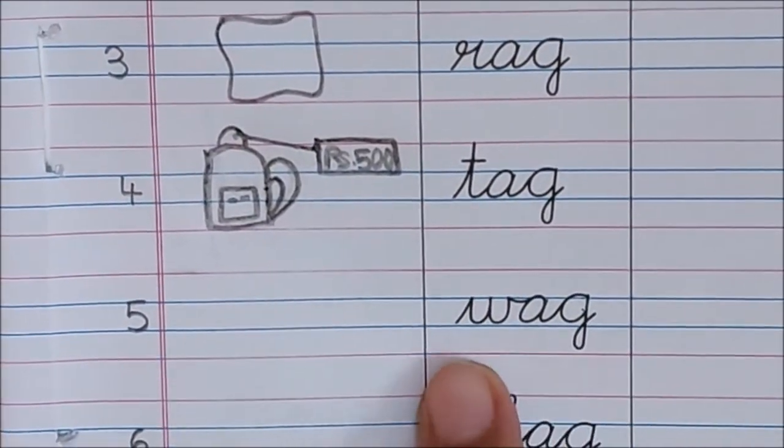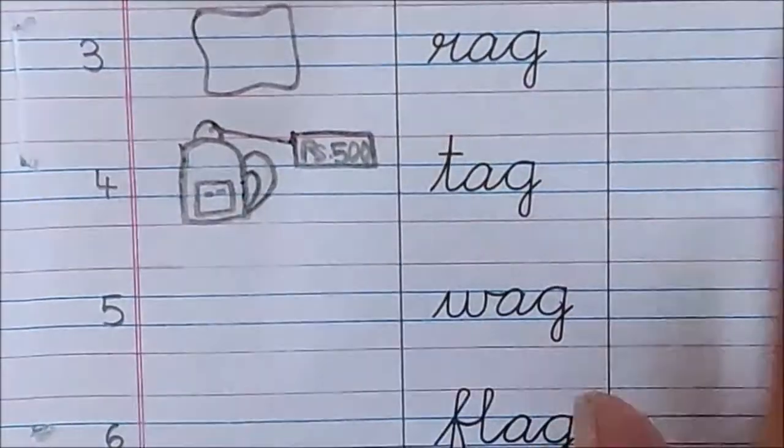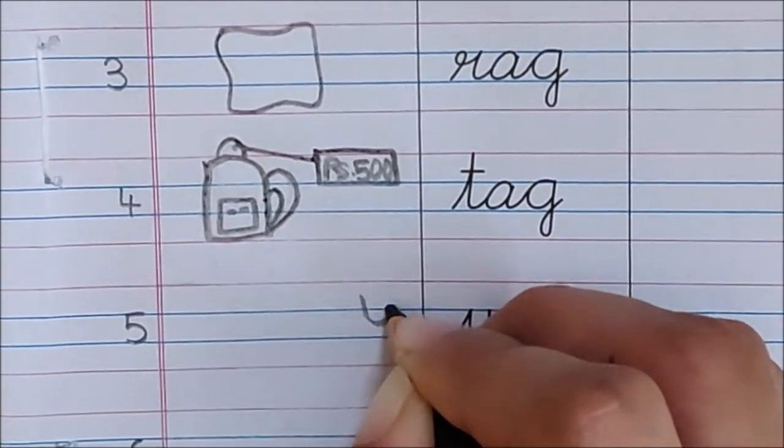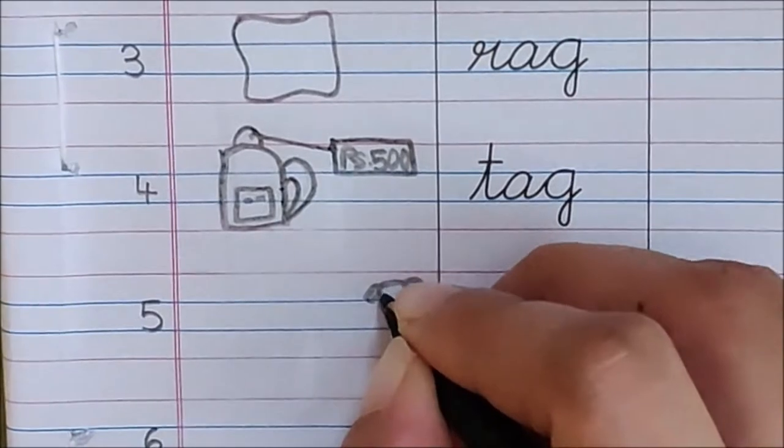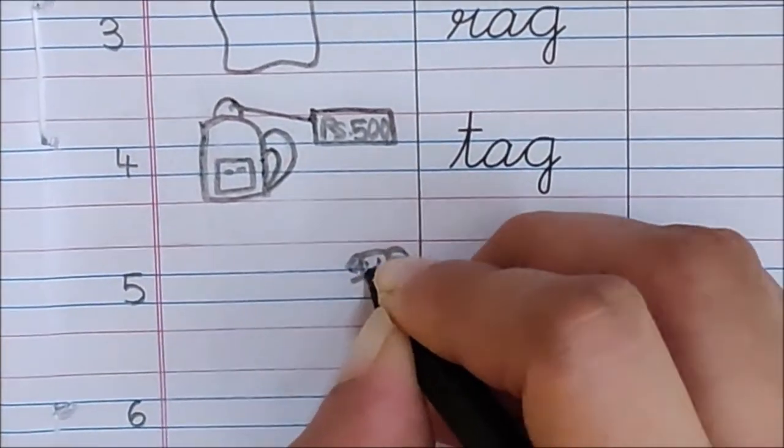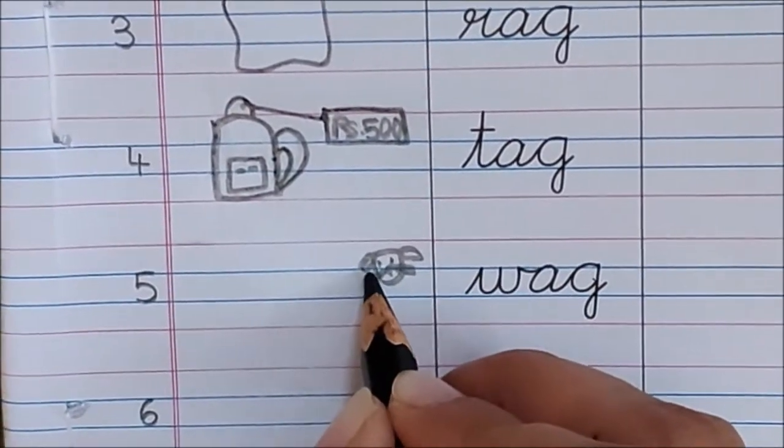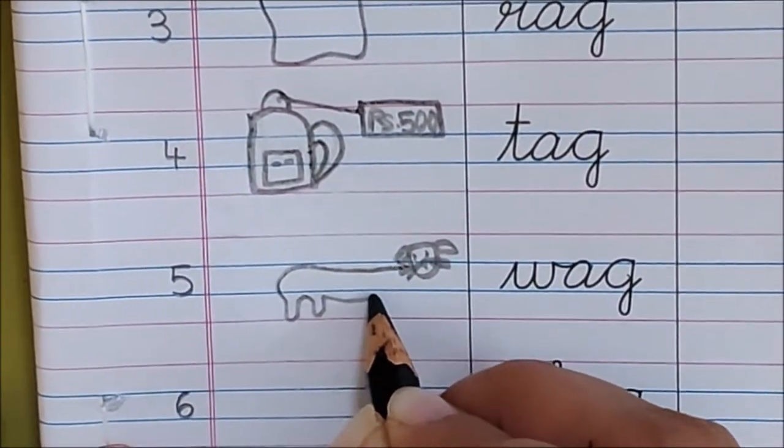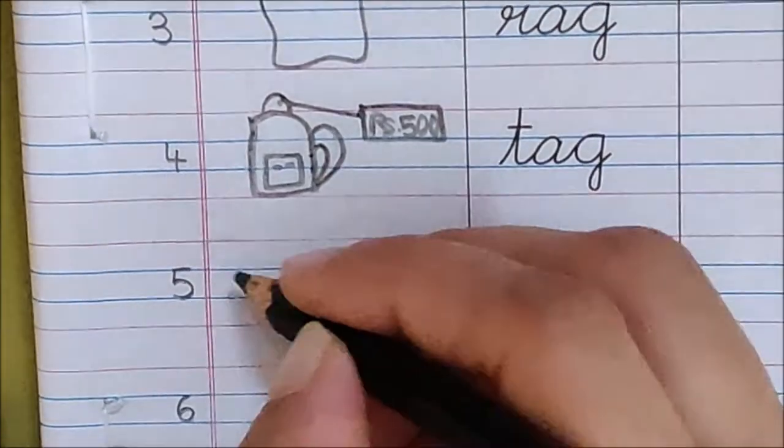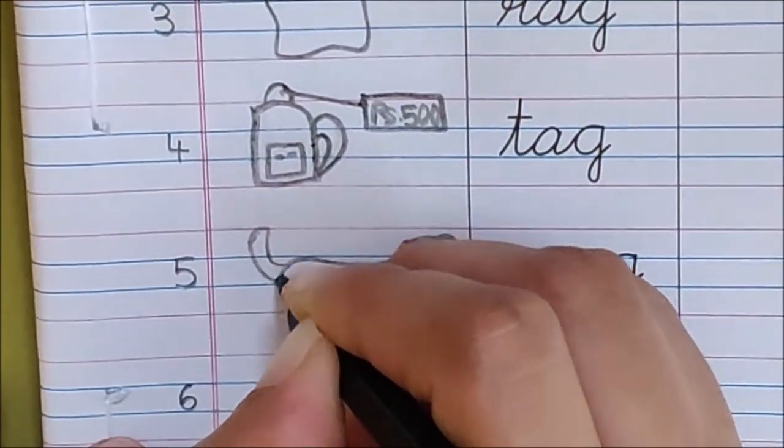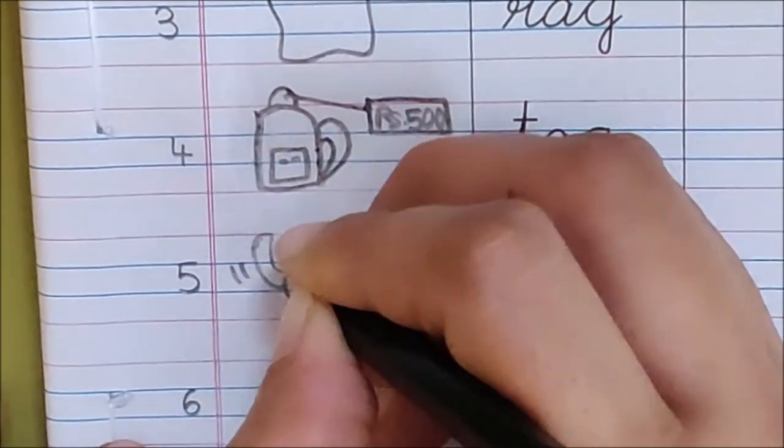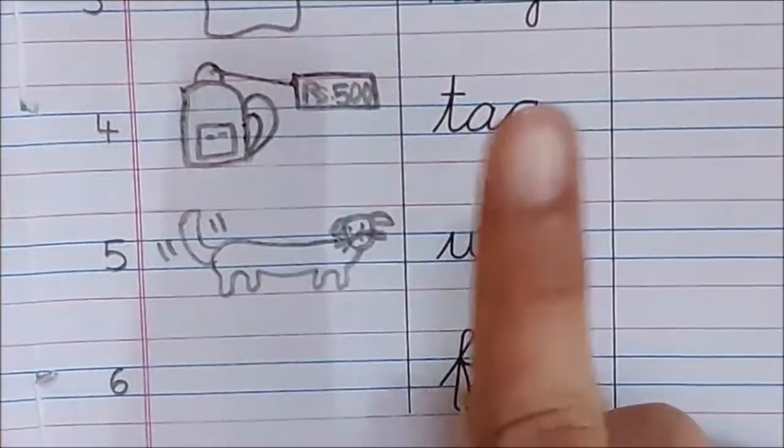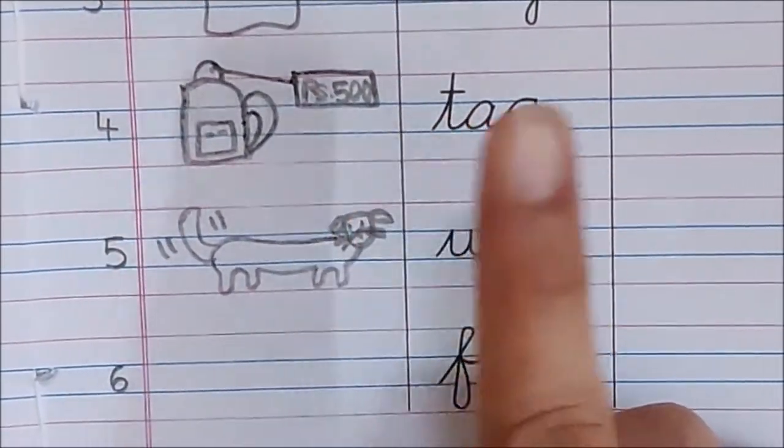Now let us read the next word. W, A, G, Wag. Wag means jaldi jaldi hillna, like this. This is a dog. These are the whiskers, and this is his body, and this is his tail. And he is wagging his tail. Wag means hillna. He is wagging his tail because he is very happy to be with you. Wag.